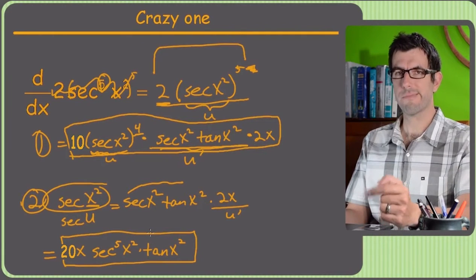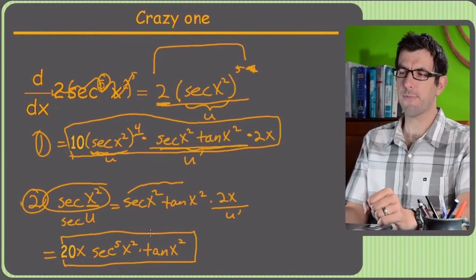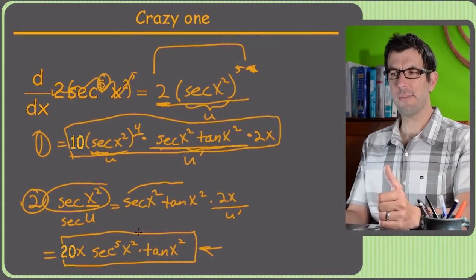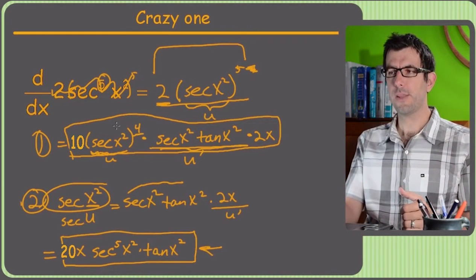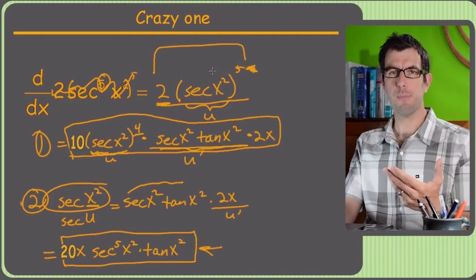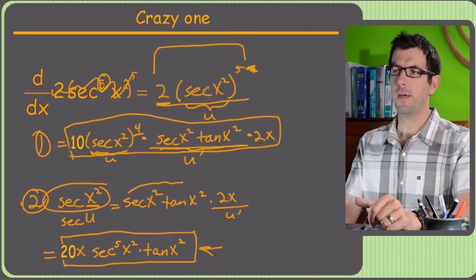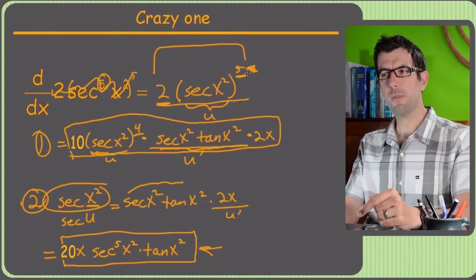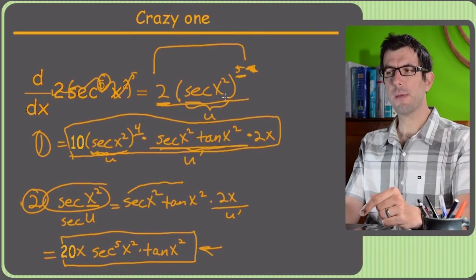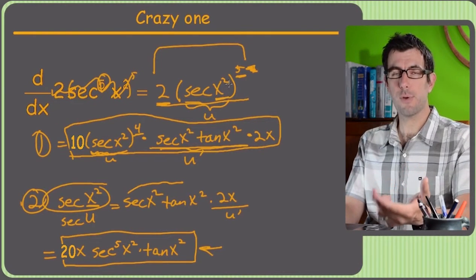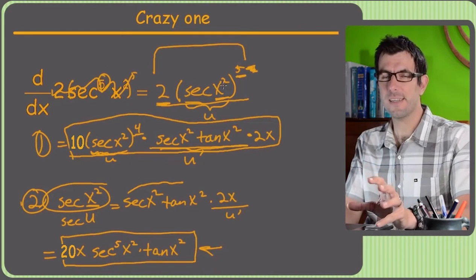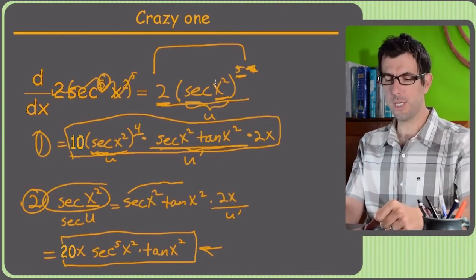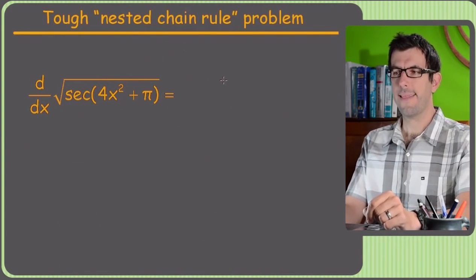If you get something different, email me — I have about 90% confidence that's correct. Looking back at the original problem, get in the habit of looking ahead: it's a power rule because something is to the fifth power, but the something that's to the fifth power is a trig function of something other than x. Any time you take a derivative of a trig function with anything other than x, that's a chain rule in and of itself. That's how you end up with a nested or double chain rule.